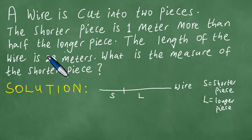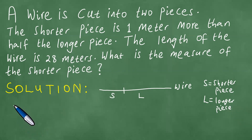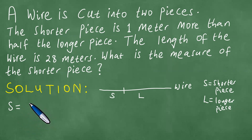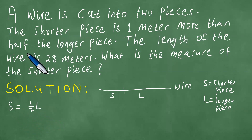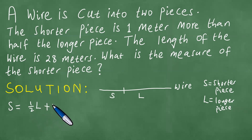The shorter piece is one meter more than half the longer piece. We are comparing the shorter piece to half the longer piece and saying the shorter piece is one more than half the longer piece. Since it is one more than half, we must add one on that side.